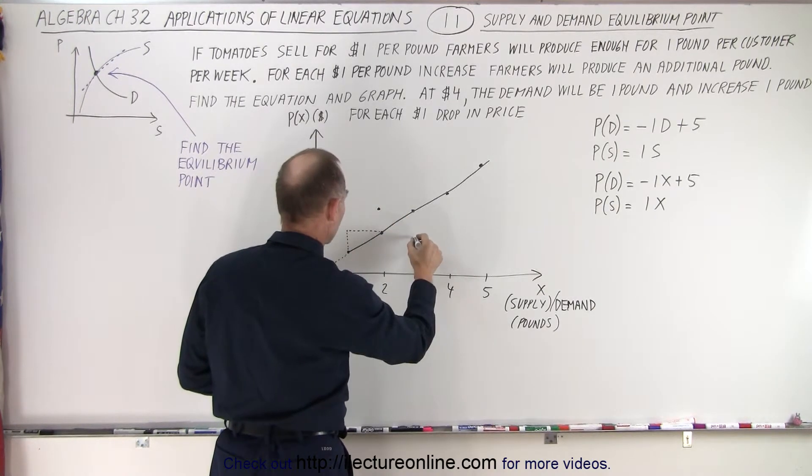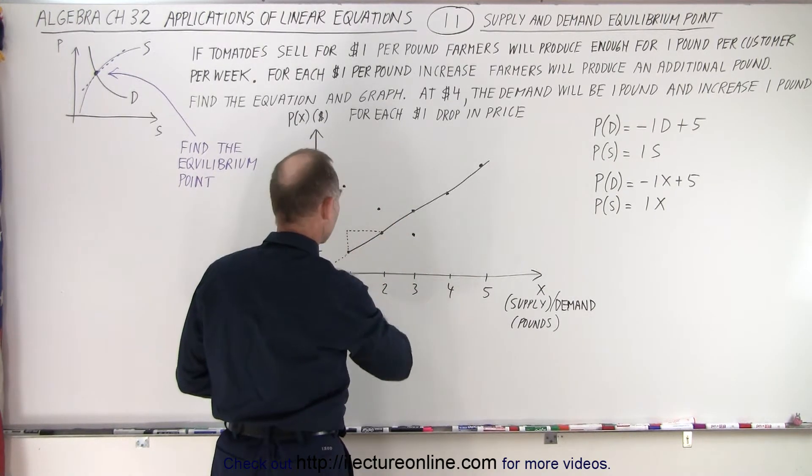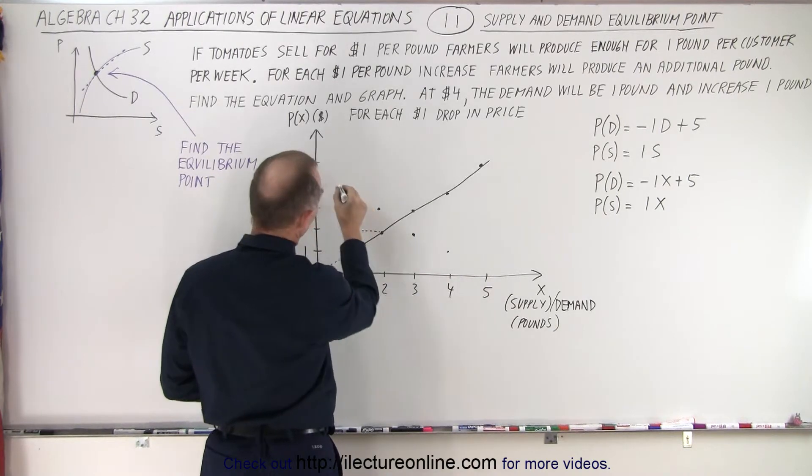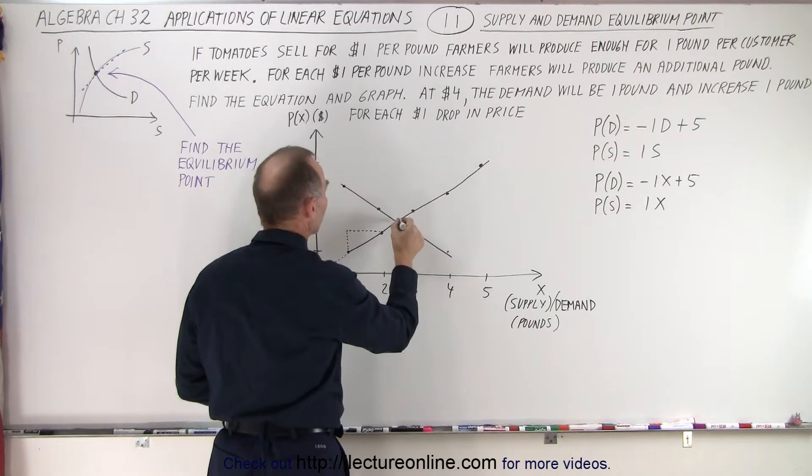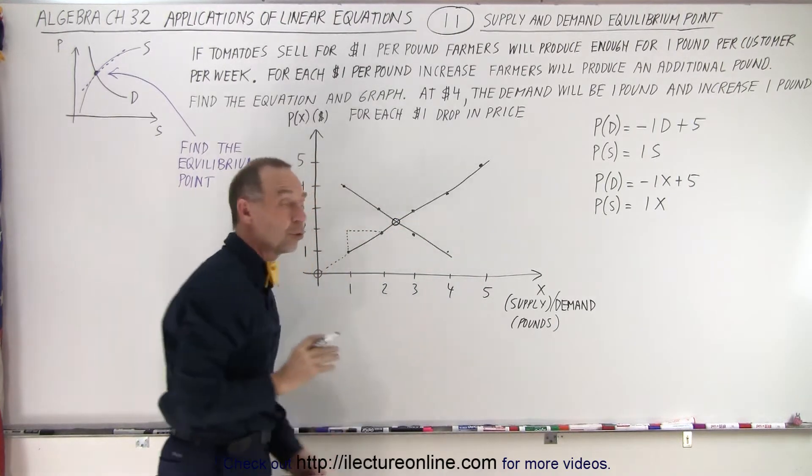At $2, the demand would be three. And at $1, the demand would be four. So let's go ahead and graph that linear function like this, and notice there's some point right here where the two cross.